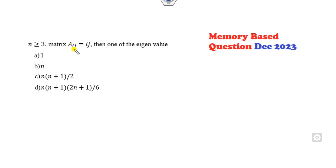Now the first question is: It is given that A_ij is the matrix which is defined as i times j. Then which of the following is one of the eigenvalues? As I mentioned in my previous shortcut tricks, you can always take the value of n. The lowest value of n is 3.